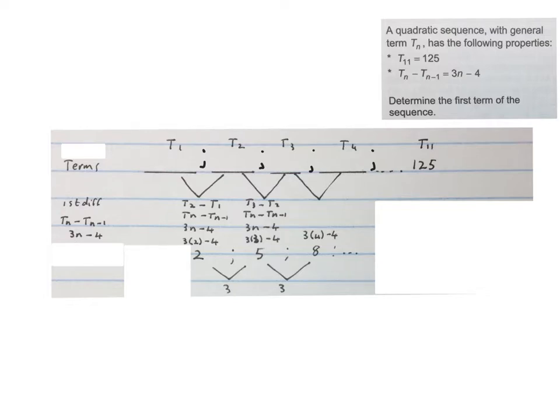Now we have our constant difference and we have our first first difference. Using our formula of the constant difference, 2a equals 3, I can work out the value of a is 3 over 2.